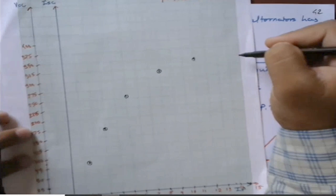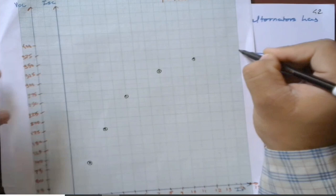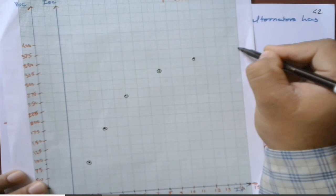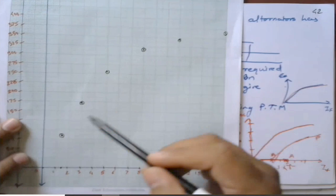The last reading at 15 ampere is 366 volt, which falls just a little below the 375 line. All points are now joined to get the open circuit characteristic (OCC) curve.